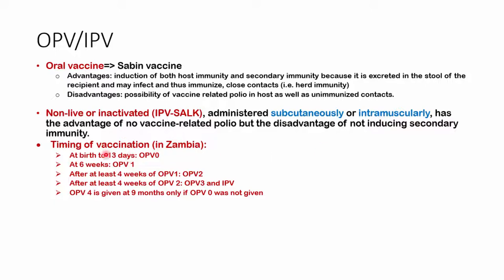How we give the vaccines: at birth and within the first 13 days, we give OPV0, though sometimes it's not given. The only two vaccines given at birth are BCG and OPV0. OPV is given three times total. You start with OPV0, then OPV1 at six weeks, with four-week intervals in between — so OPV2 at 10 weeks, OPV3 together with IPV at 14 weeks, and OPV4 at nine months if OPV0 was not given.